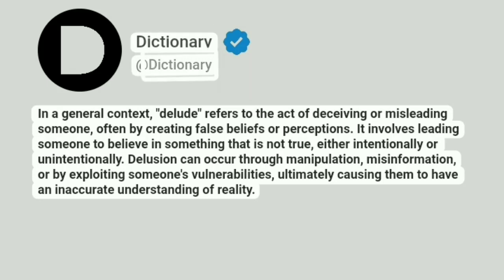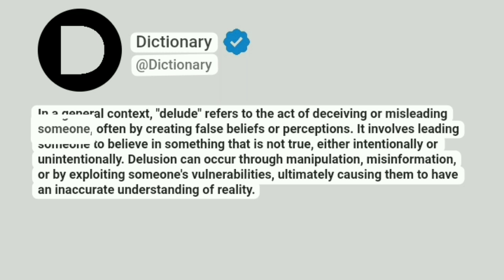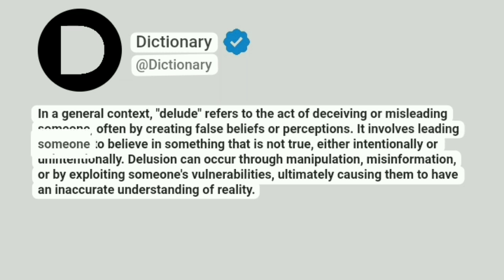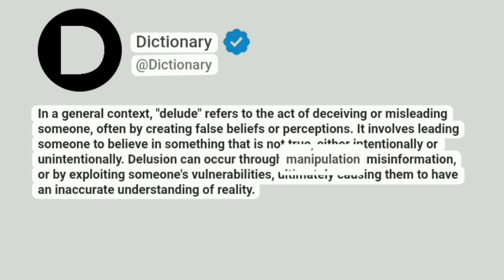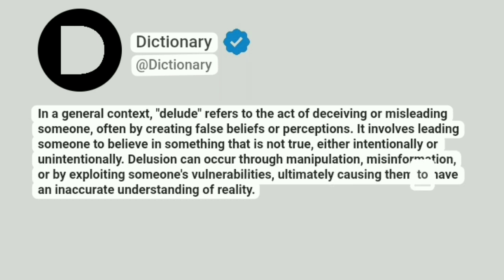Dictionary. In a general context, delude refers to the act of deceiving or misleading someone, often by creating false beliefs or perceptions. It involves leading someone to believe in something that is not true, either intentionally or unintentionally. Delusion can occur through manipulation, misinformation, or by exploiting someone's vulnerabilities, ultimately causing them to have an inaccurate understanding of reality.